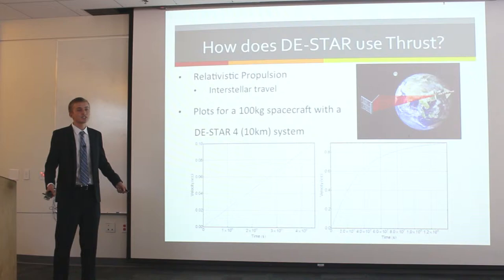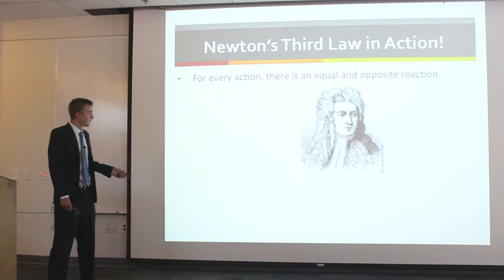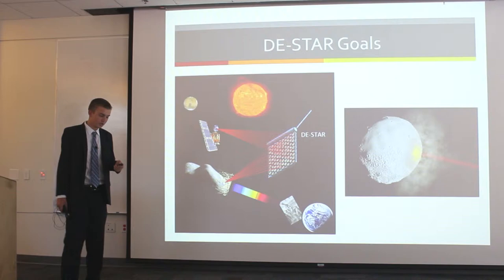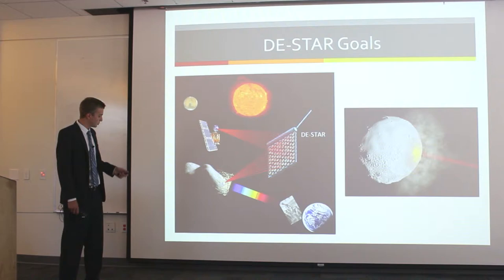This relates back to what we use in DSTAR, and we also use this for relativistic propulsion. We hypothesize that we can put this laser spot onto a reflector on the back of a spaceship and use a photon drive to power the spaceship.